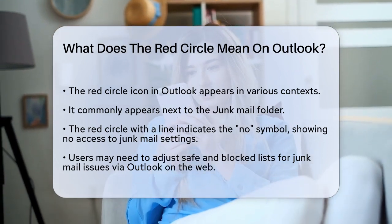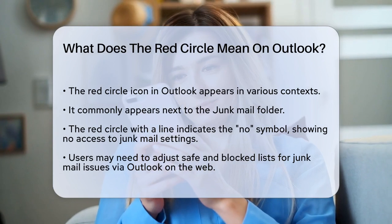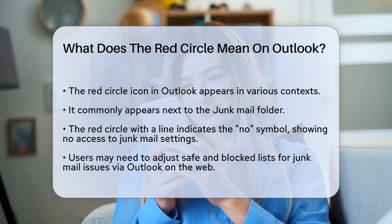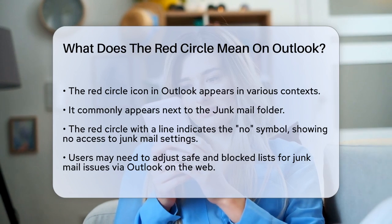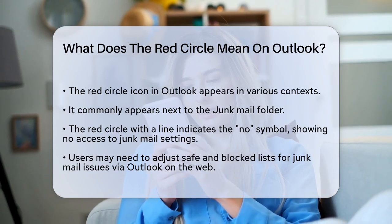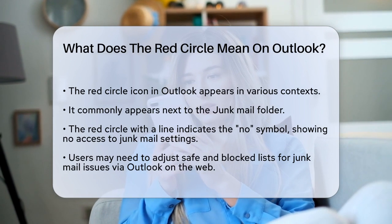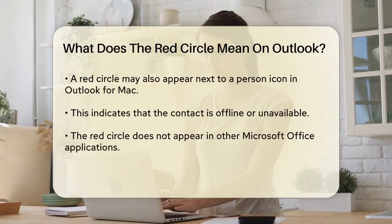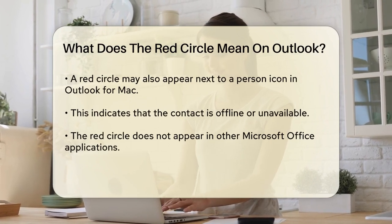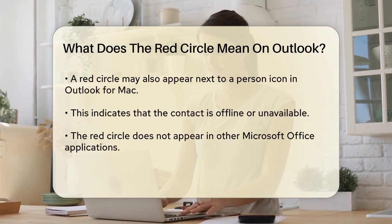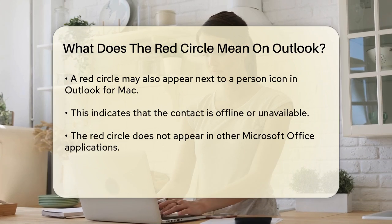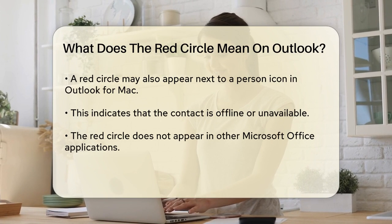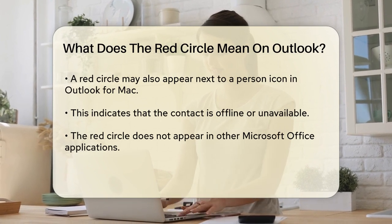One common place is next to the junk mail folder. The red circle with a line through it is not a highlight, but rather the universal no symbol. This icon indicates that you cannot access or modify the junk mail settings directly through this icon — it's a visual indicator of the junk mail folder itself. If you're having issues with legitimate emails going to the junk folder, you might need to adjust your safe and blocked lists, which can be done through Outlook on the web for Microsoft 365 and Outlook.com mailboxes.